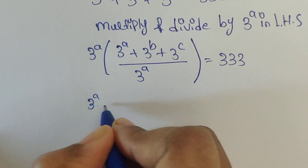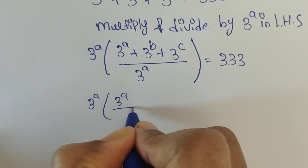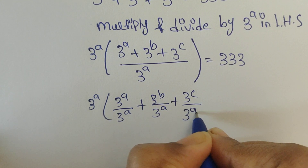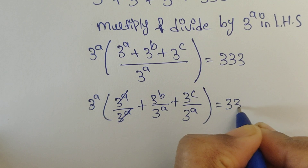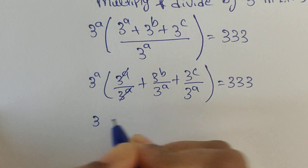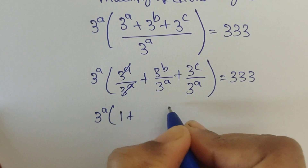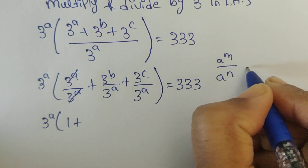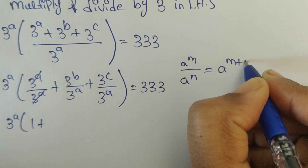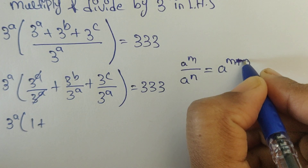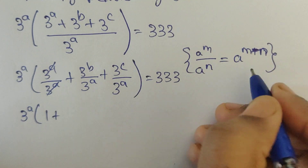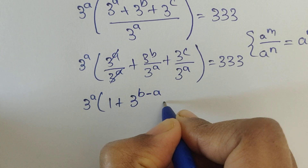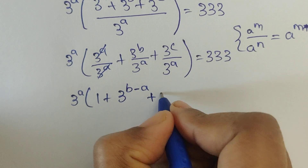So now we can write: 3 power a by 3 power a plus 3 power b by 3 power a plus 3 power c by 3 power a. Here we can apply the formula: a to the power m divided by a to the power n. So using this formula we get 3 power b minus a. Again use this formula here.